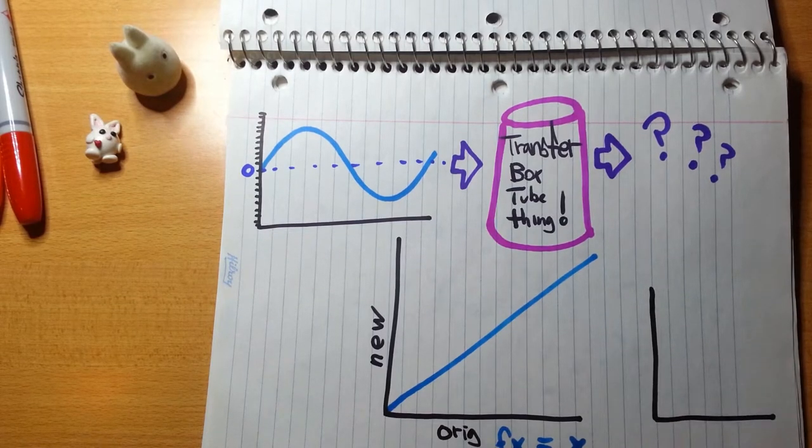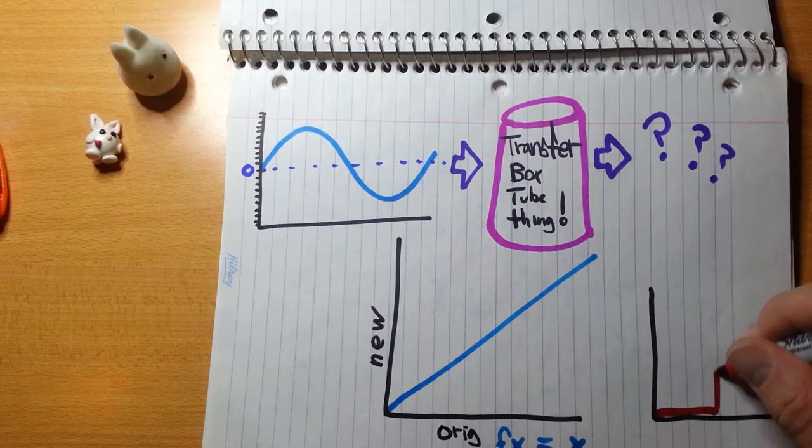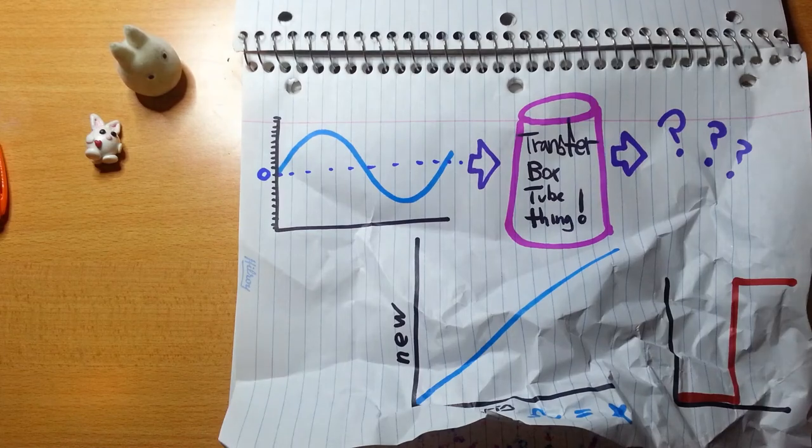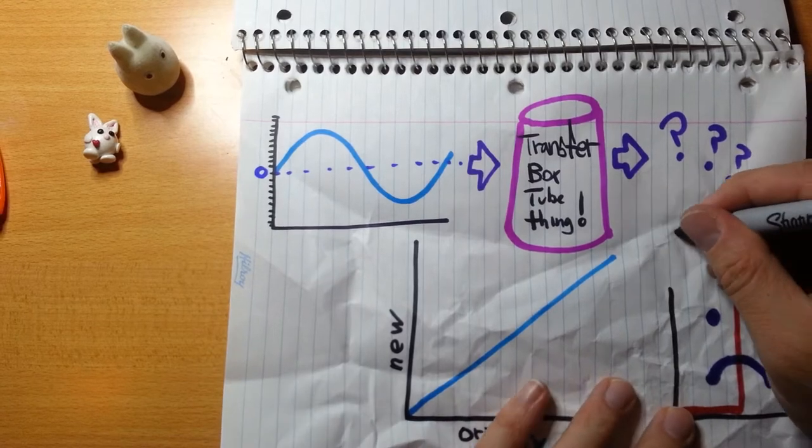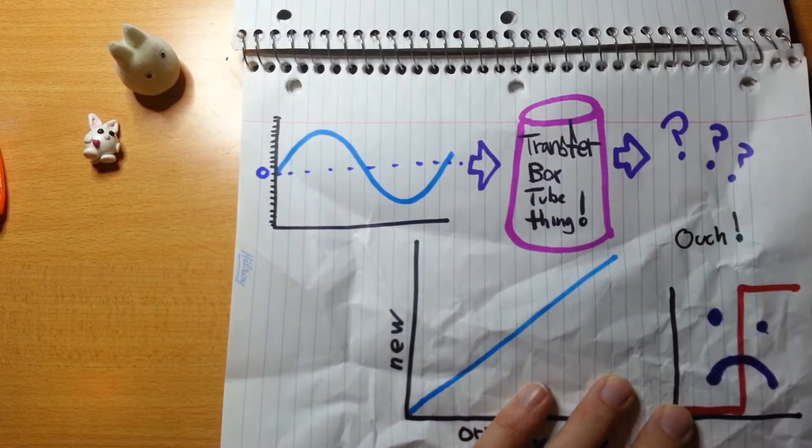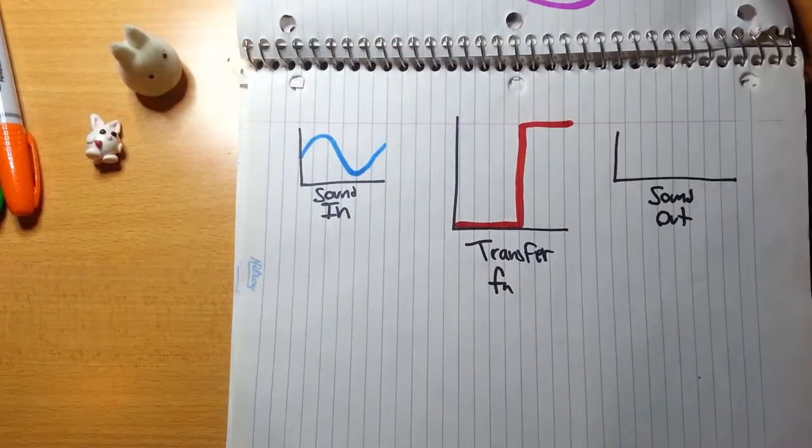But what happens when we choose a completely different line or a different transfer function? What about something like this? Ouch! So yeah, you can see how the effects here can have effects over here. So see how that waveform is completely distorted? Yeah, transfer functions have some magic.